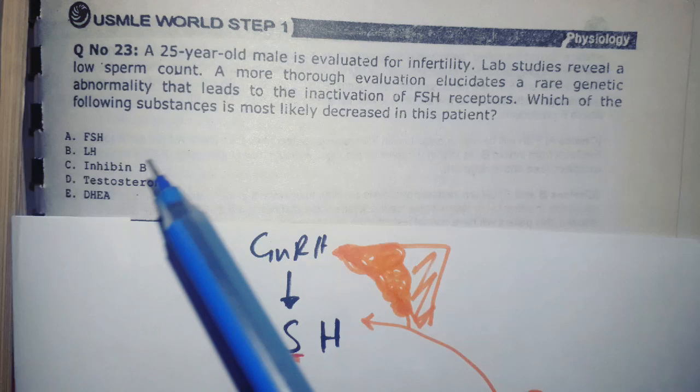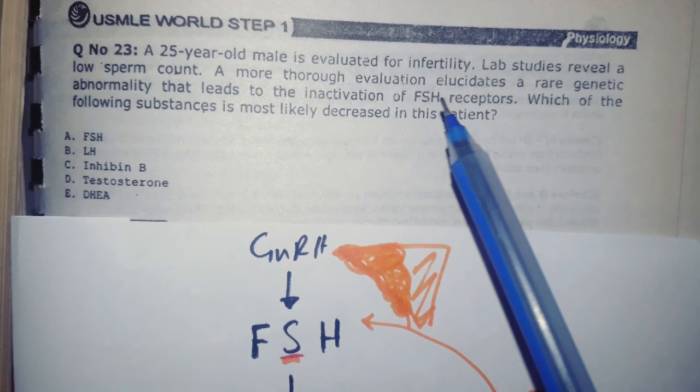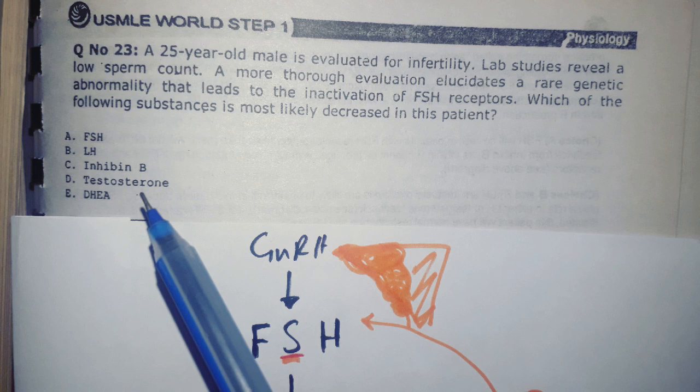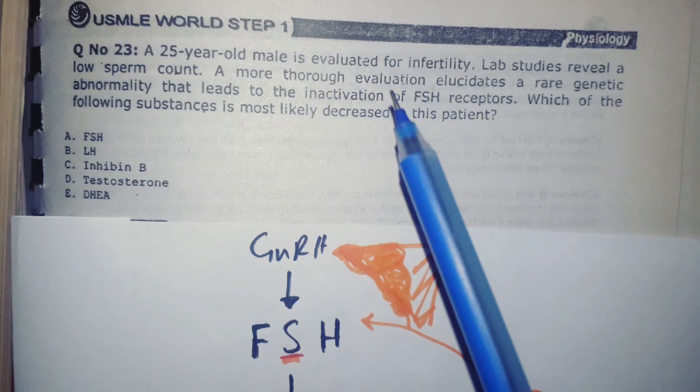A 25-year-old male is evaluated for infertility. Lab studies reveal a low sperm count. A rare genetic abnormality leads to the inactivation of FSH receptors. Which of the following substances is most likely to decrease in this patient: FSH, LH, inhibin, or testosterone? In this MCQ they say there is infertility and inactivation of FSH receptor.